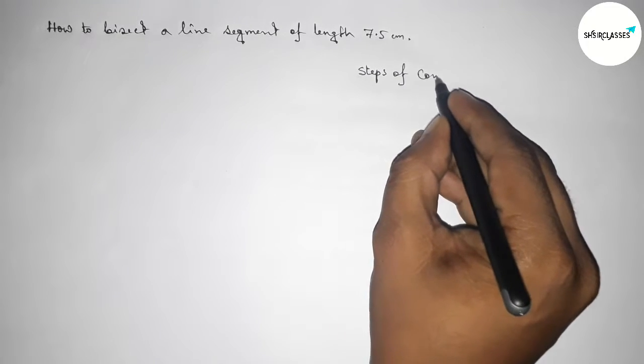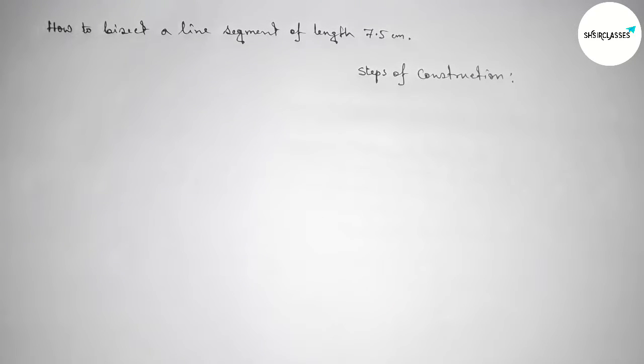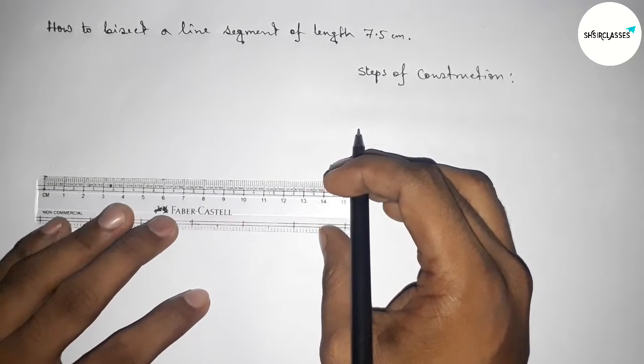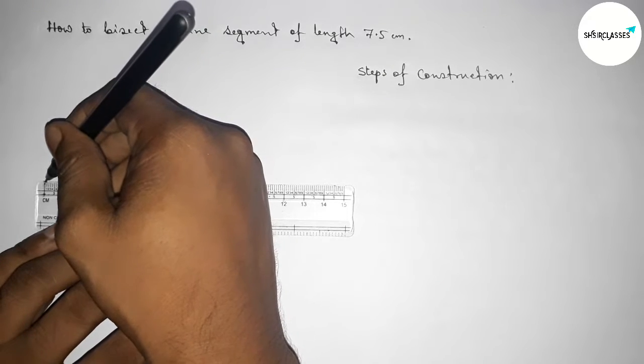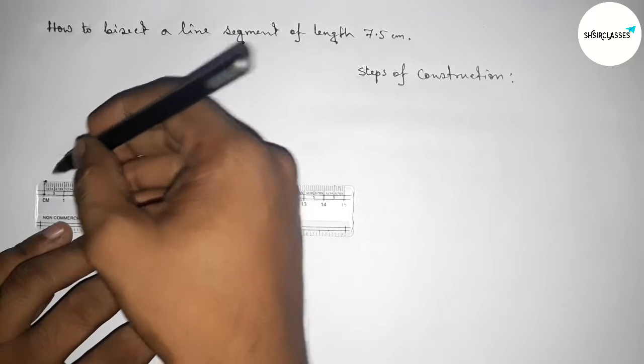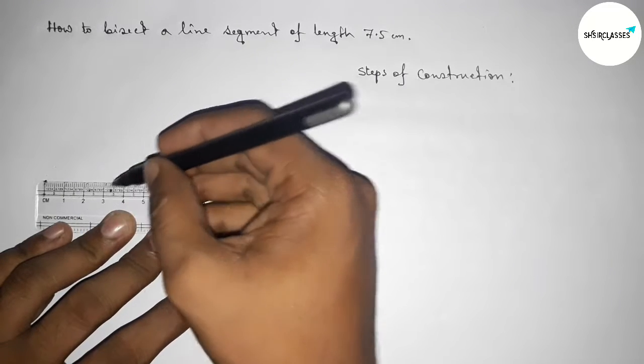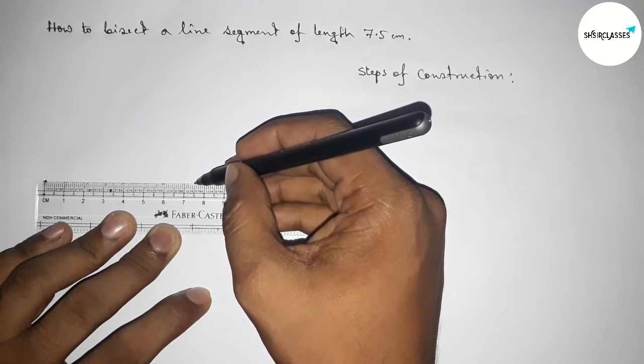Steps of construction here. Okay, so now first we have to draw a line segment of length 7.5 centimeters. So this is starting at zero, and now this is one, two, three, four, five, six, seven, and this is seven...